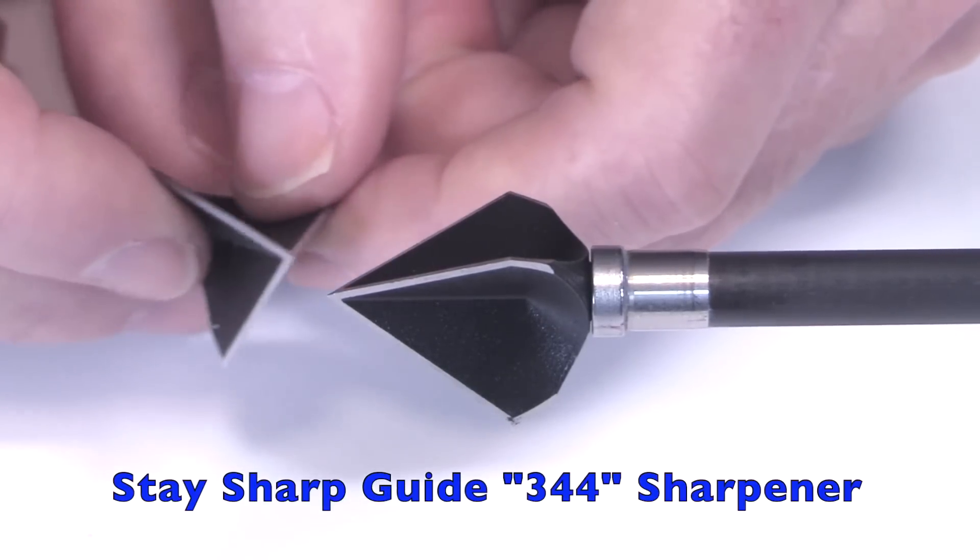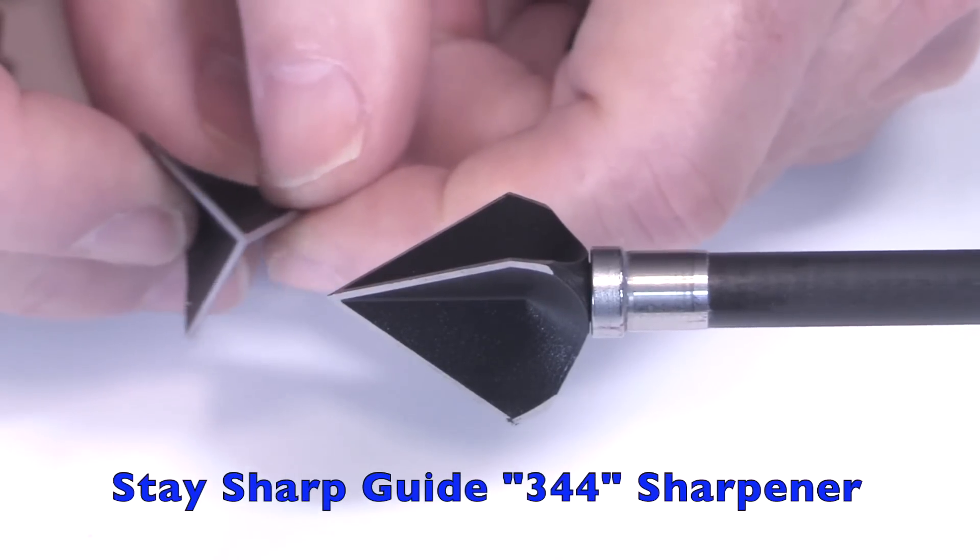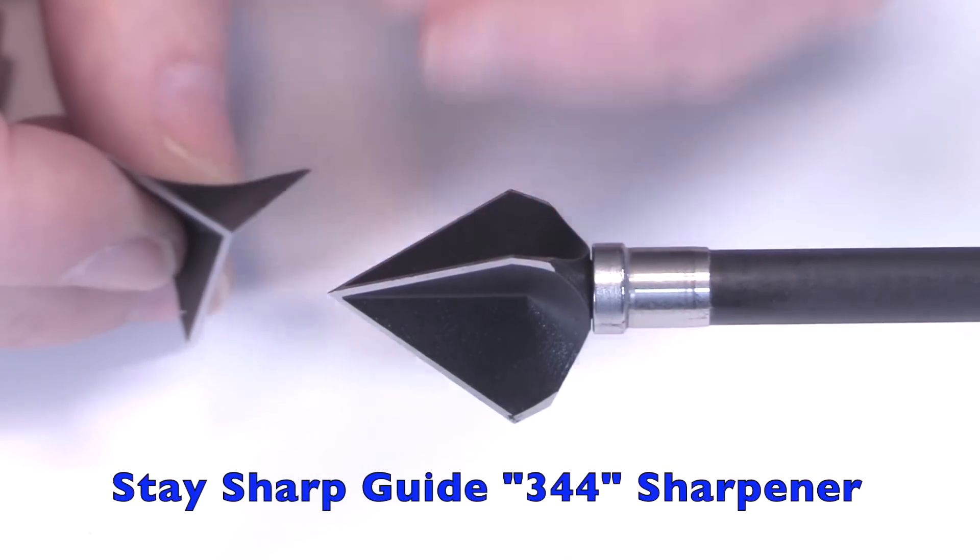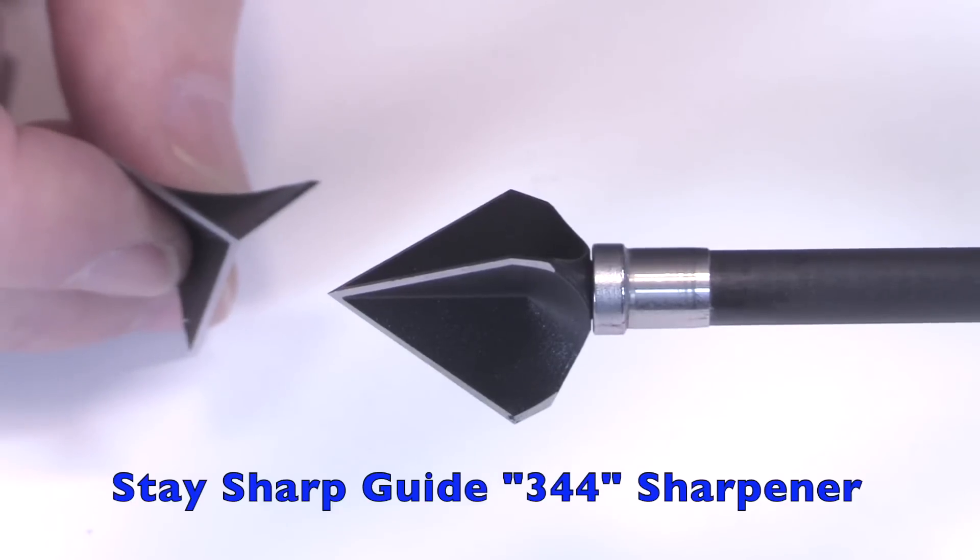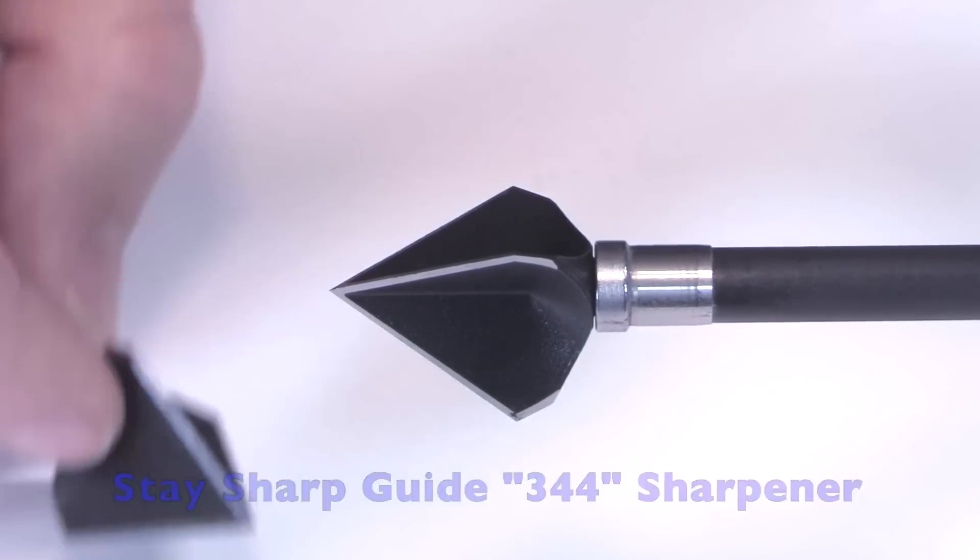Still has the edge super durable. And it's going to be about 15 to 20% sharper. In a previous video that I did last year of the Annihilator, you can see me demonstrate that and how I made the head a lot sharper. So check out the Stay Sharp Guide 344 if you want to make it extra sharp.